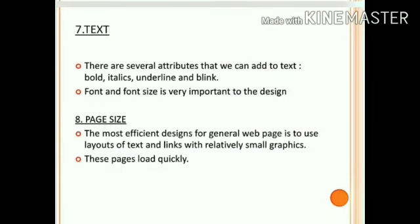Next, text. There are several attributes that we can add to text: bold, italic, underline, and blink. Among the four, bold is the most commonly used as it puts emphasis on the text and makes it stand out. Sometimes blink is also used to make text stand out, but this is not recommended by most web developers unless the blinking text is less than two words, because a blinking text will become very difficult to read as it gets longer.